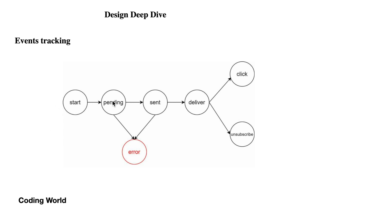Monitor and queue notifications — use metrics to monitor performance: which system is sending how many notifications. For event tracking, track the state of messages: pending, sent, error (put back to pending), delivered, clicked, and unsubscribed. All these event tracking states should be kept in mind while designing the system to handle the flow of your messages.